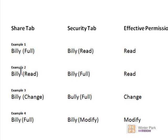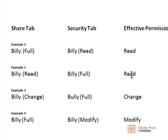Another example: Billy has Read Share permissions and Full NTFS permissions. We compare the two tabs — the most restrictive is Read, so his effective permissions are Read. Another example: Billy has Change under Share permissions and Full under NTFS. The most restrictive is Change, so he has Change. One more example: Full Share permissions and Modify NTFS permissions — his effective permissions would be Modify.